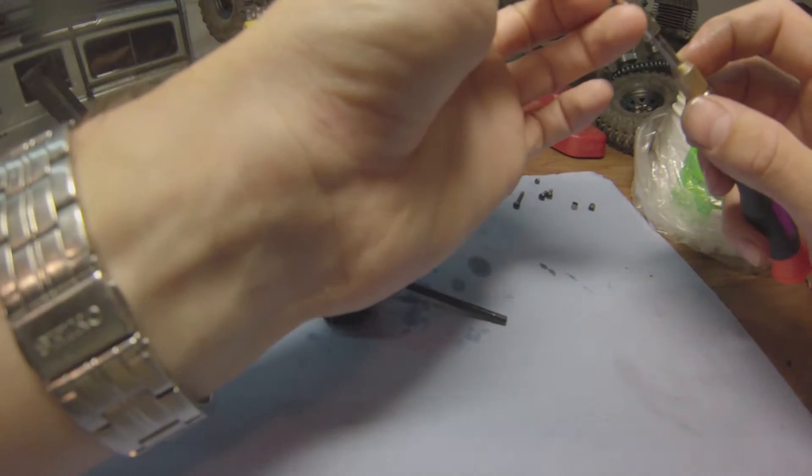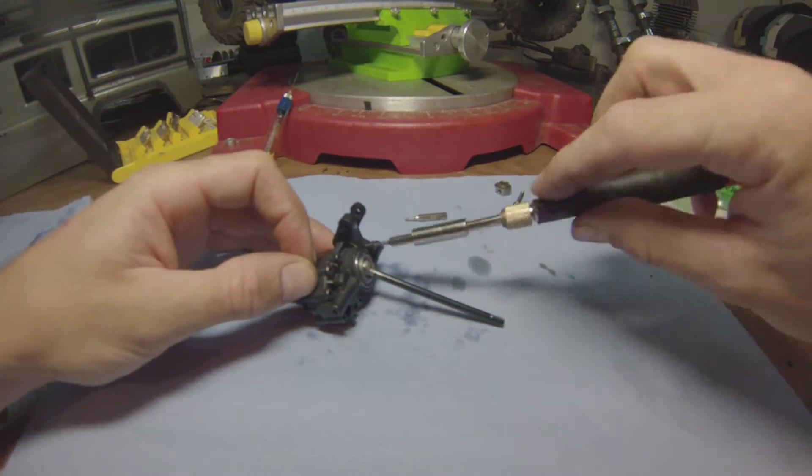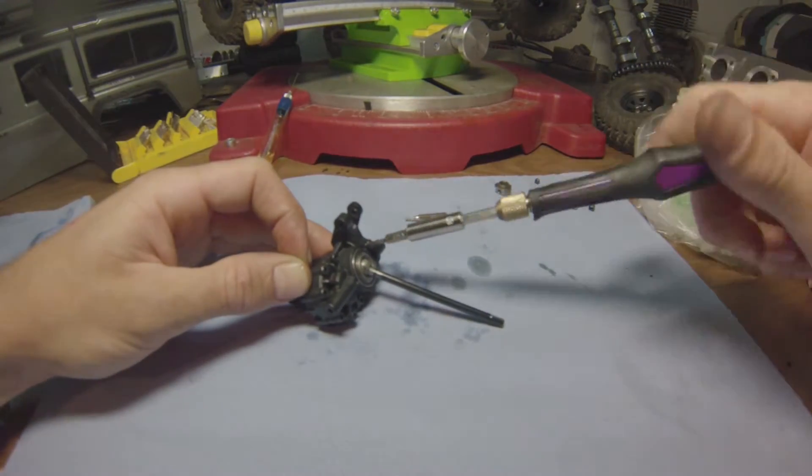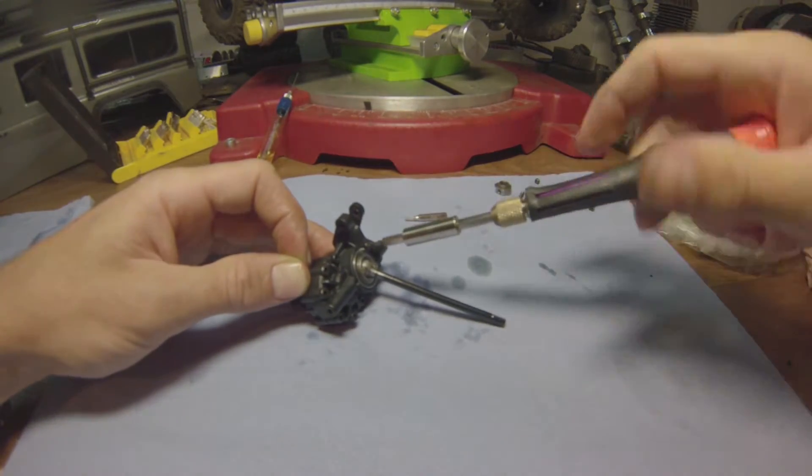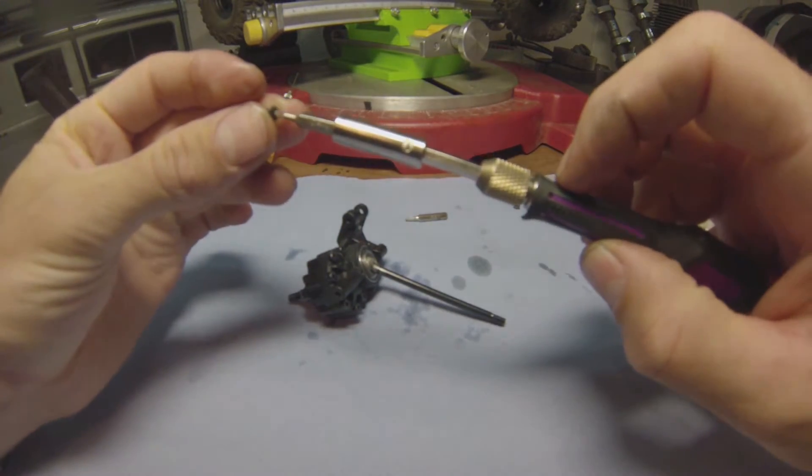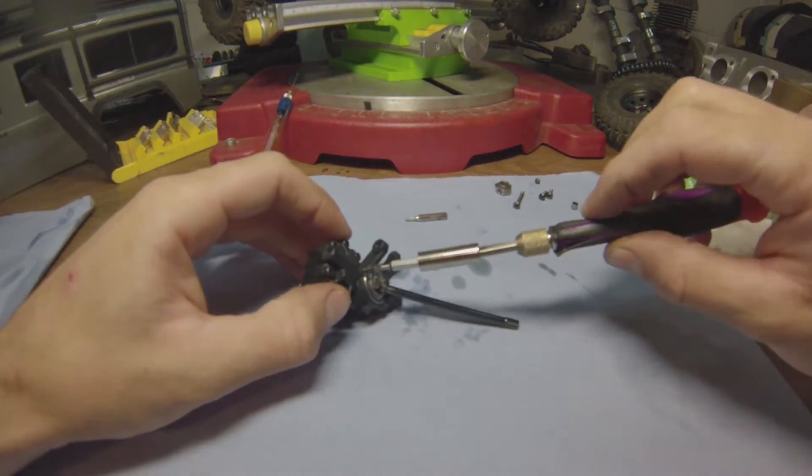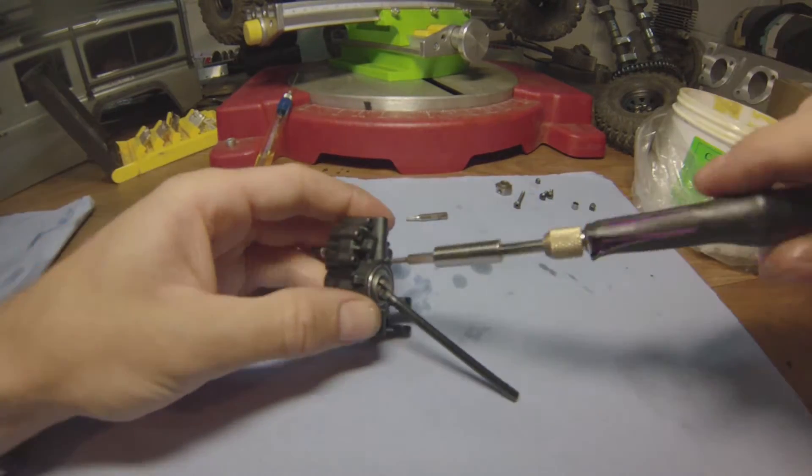And put these little tiny things. Again, the function of these three is just to hold the bearing in place, so don't go crazy. Finger tight is already too tight. In fact, in this case, you just have to seat them. That's it.